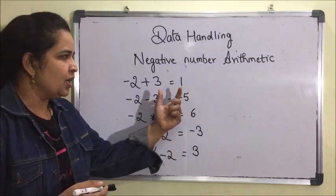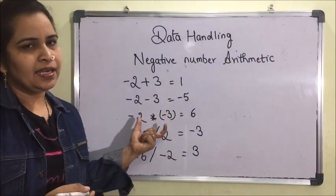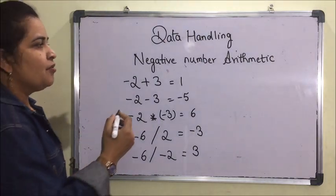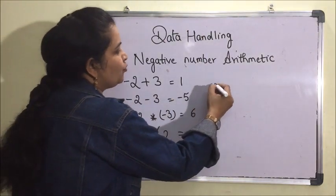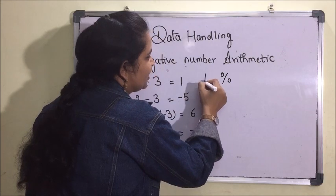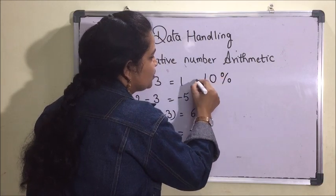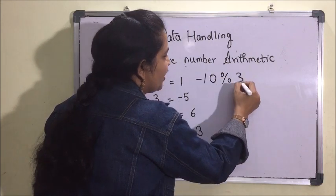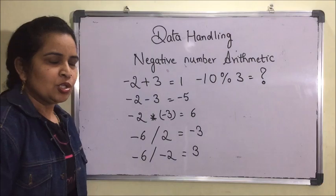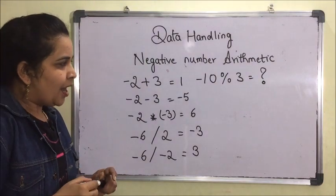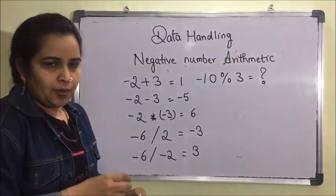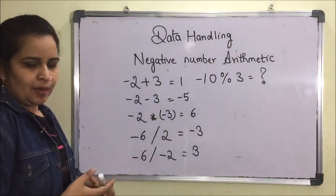These operators can all be used easily while handling negative numbers. Confusion arises when we have to find the modulo of a negative number. For example, what is minus 10 mod 3? Before explaining this, let me tell you about the floor function.